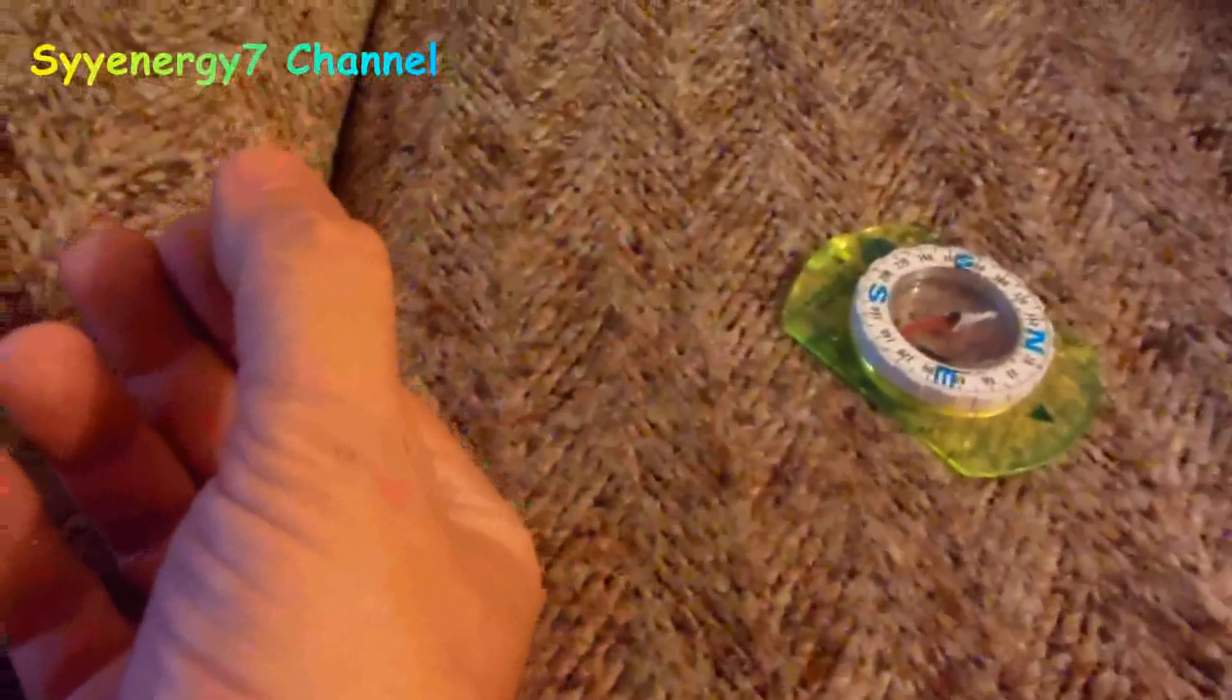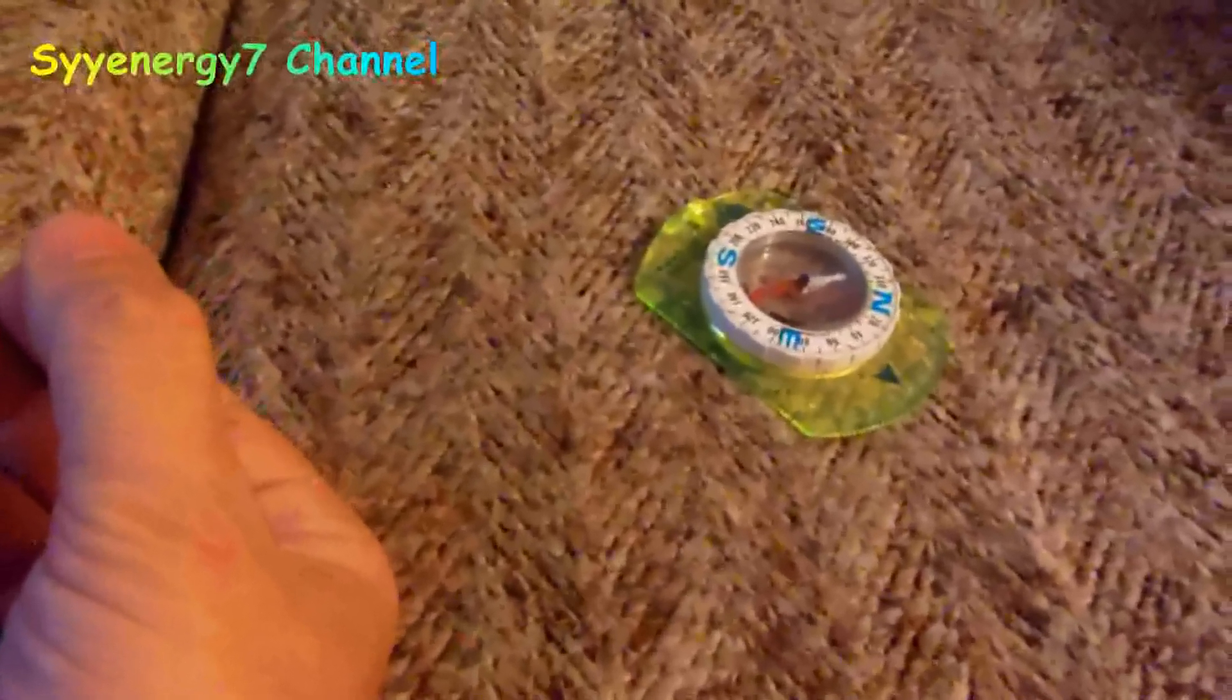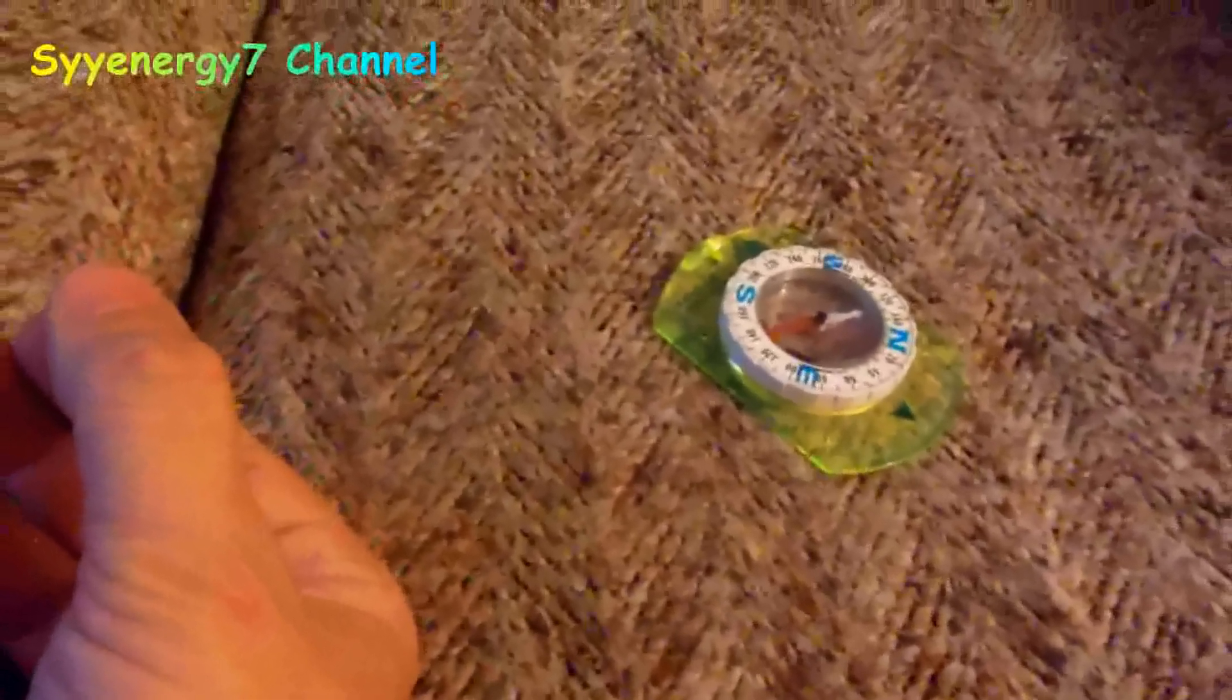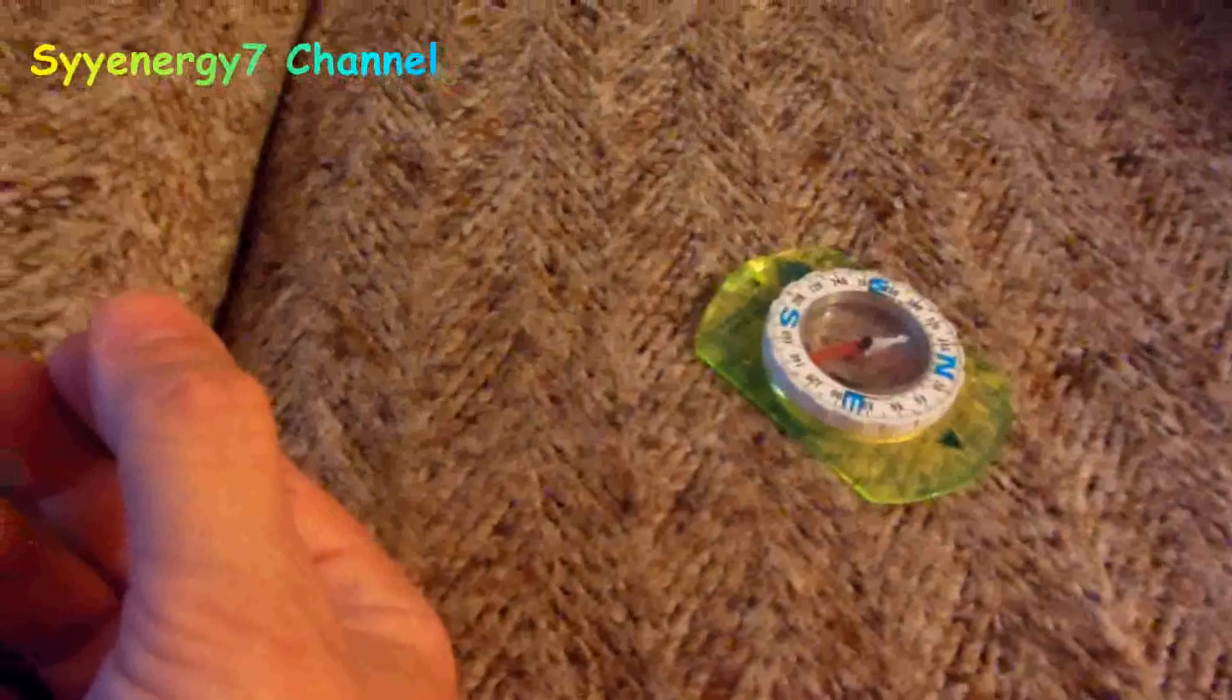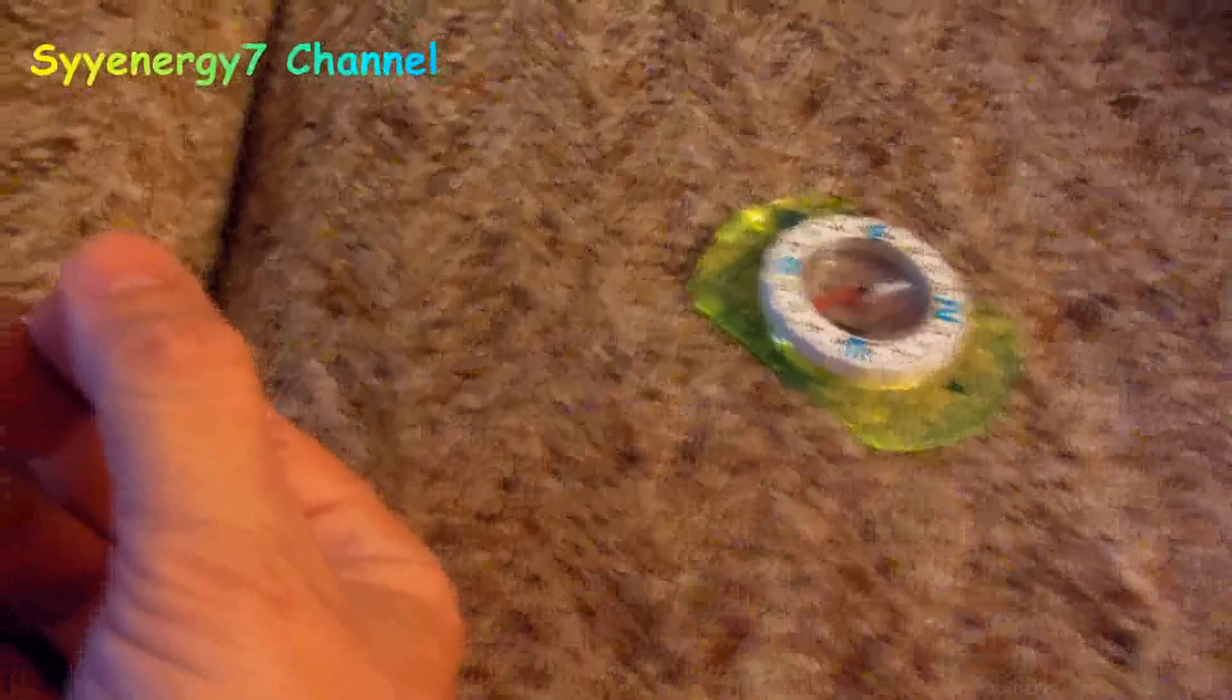And that is why you want to have the needle, and you don't want to put the magnet too close because you can actually reverse the polarity of the magnet, of the compass itself and magnetize the compass so it's actually facing the opposite direction. You can actually change the polarity of the compass itself. You don't want to put the magnet too close.